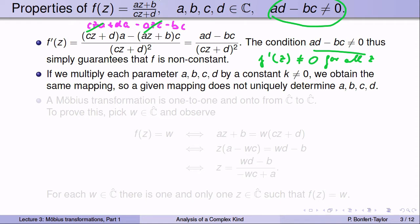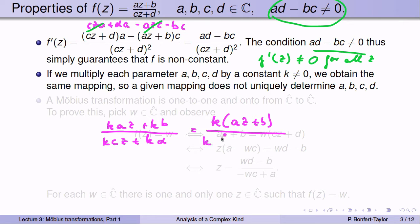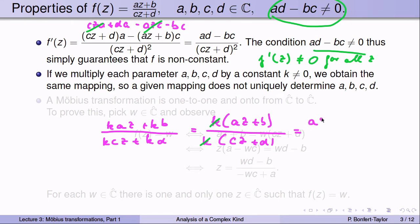Notice that if you multiply each of the parameters a, b, c, d by a constant k, you get the exact same mapping: (kaz + kb) / (kcz + kd). You can factor out k on top and bottom and cancel, leaving (az + b) / (cz + d) again. So multiplying all parameters by a non-zero constant gives the same mapping, meaning for a given mapping, the constants a, b, c, d are not uniquely determined.